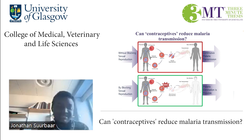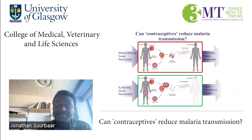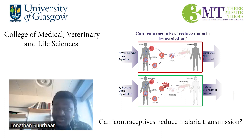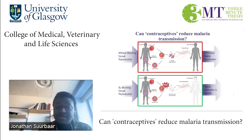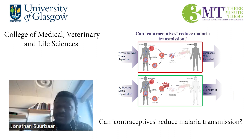Let's talk about sex a bit. There are two major types of reproduction: sexual reproduction and asexual reproduction. In sexual reproduction, however, the parasite that causes malaria is able to undergo both sexual and asexual reproduction.